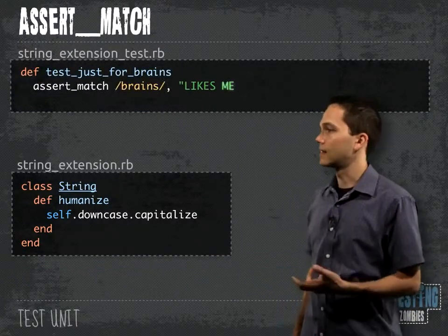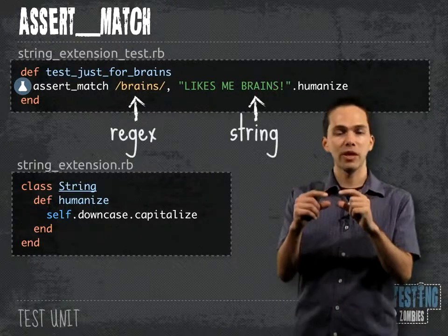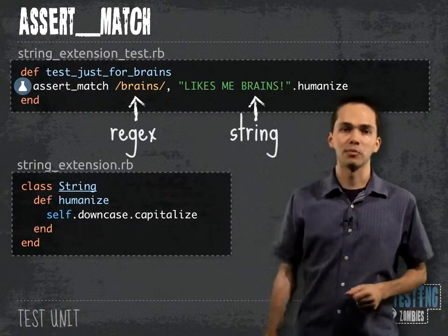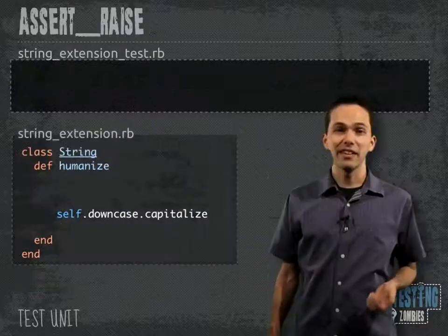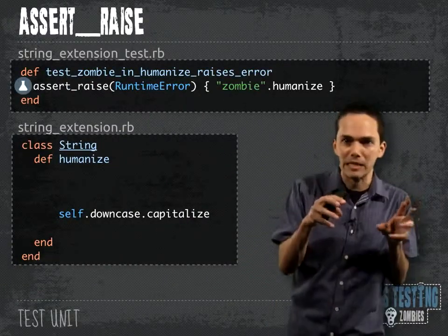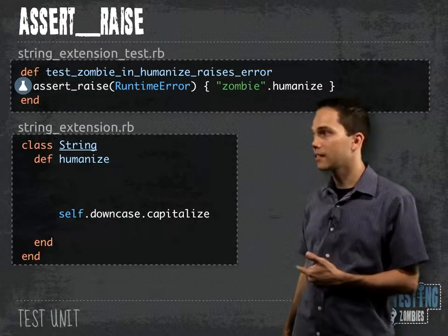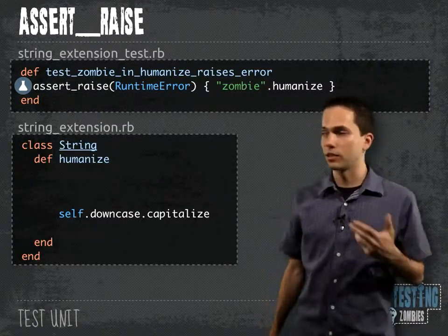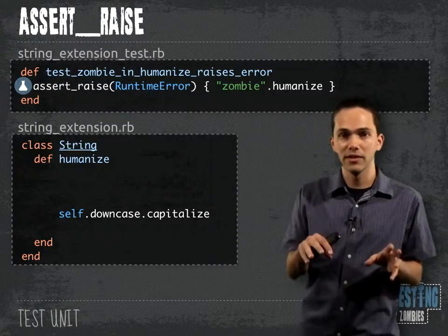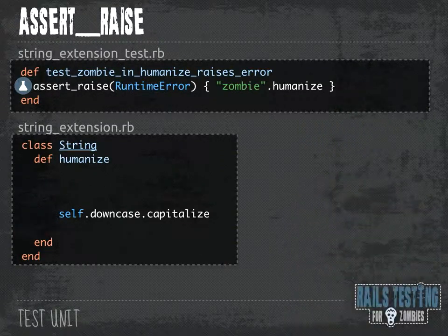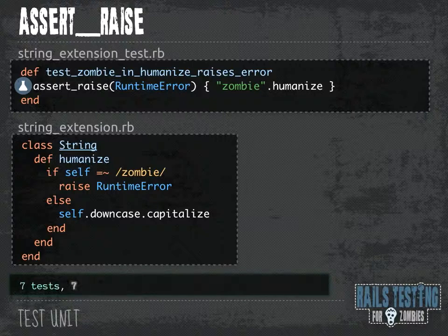Another test we could write is test_just_for_brains using the assert_match assertion, which takes a regex as the first parameter and tries to match it against the second parameter — if it matches, it passes. Our method is called humanize, and we want to make sure there are no zombies inside of it. So we're going to make sure that a runtime error is raised when we call humanize on a string that contains the word zombie. If we run this test right now, it's going to fail — that's good, we want it to fail. Then in the second step, we add the implementation: if the string contains zombie, raise a runtime error. We run the tests and they all pass.